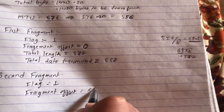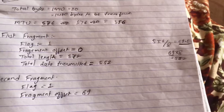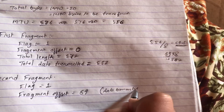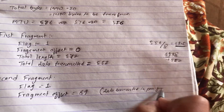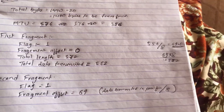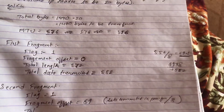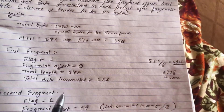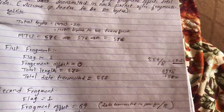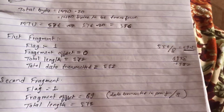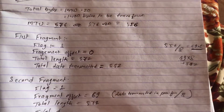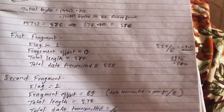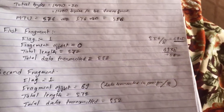So the fragment offset of the second fragment is 69 — that is, the data transmitted in the previous fragment (552) divided by 8. The total length for both the first and second fragments is 572, and the total data transmitted in each is 552 bytes (which is 572 minus the 20-byte IP header).